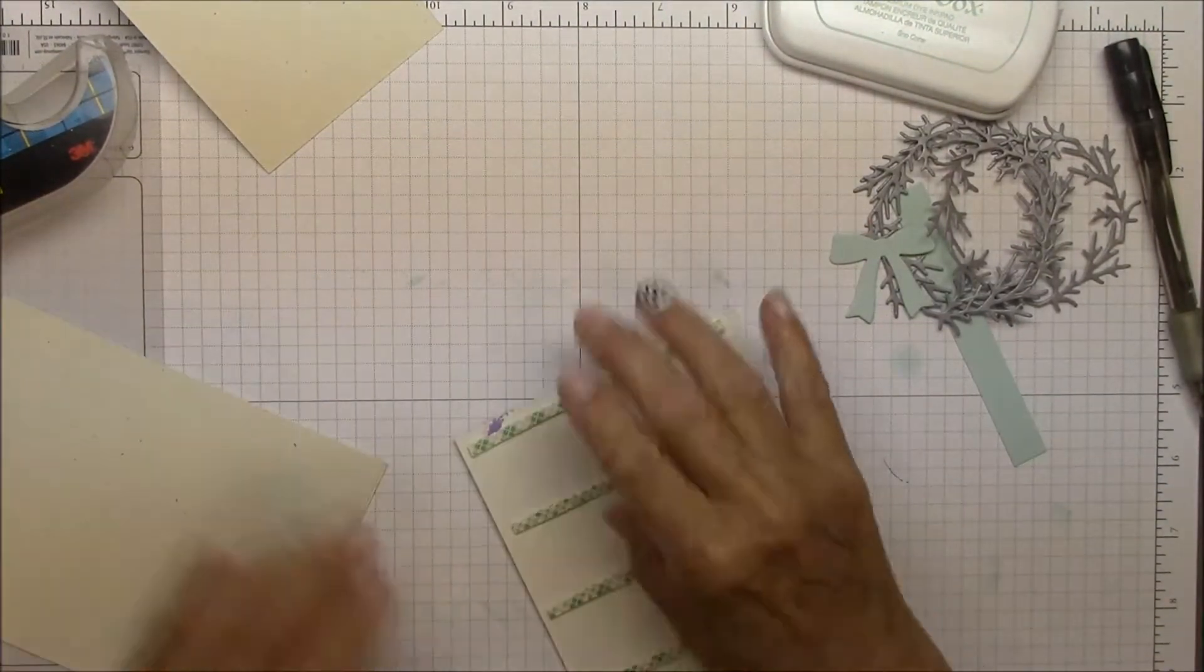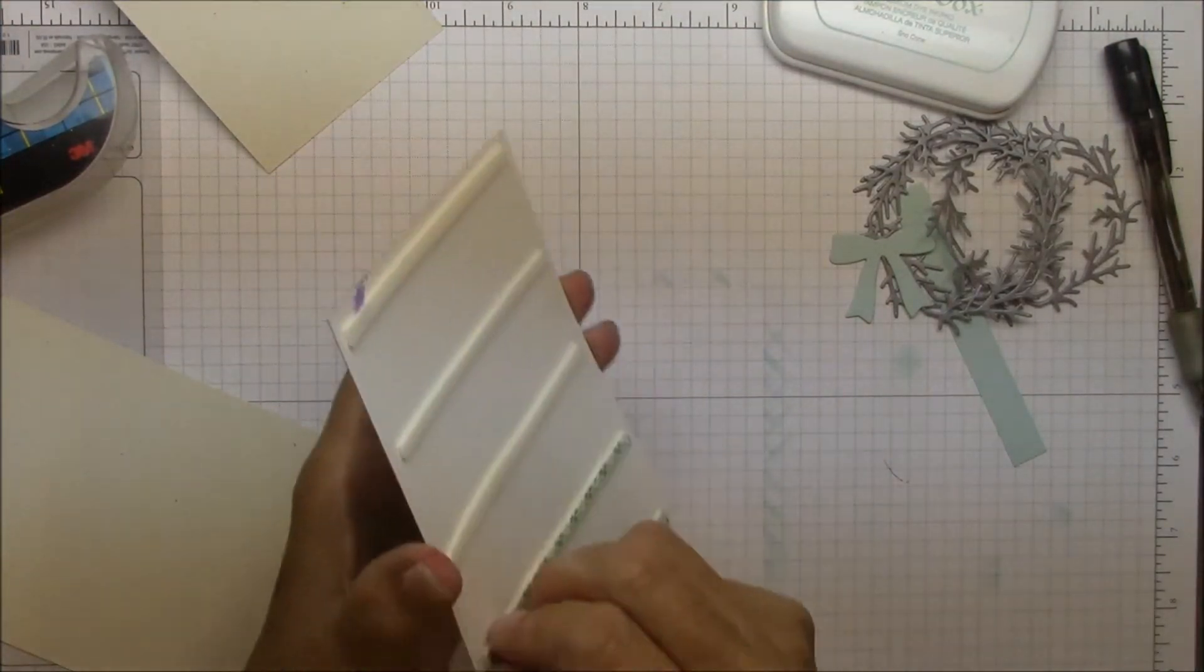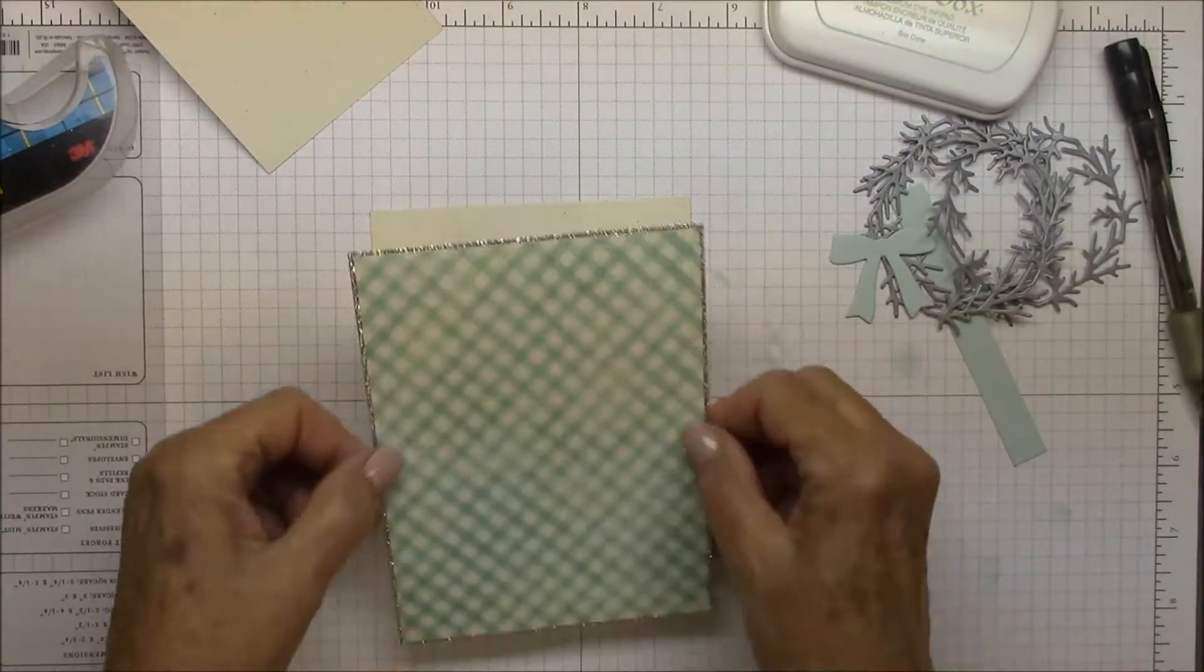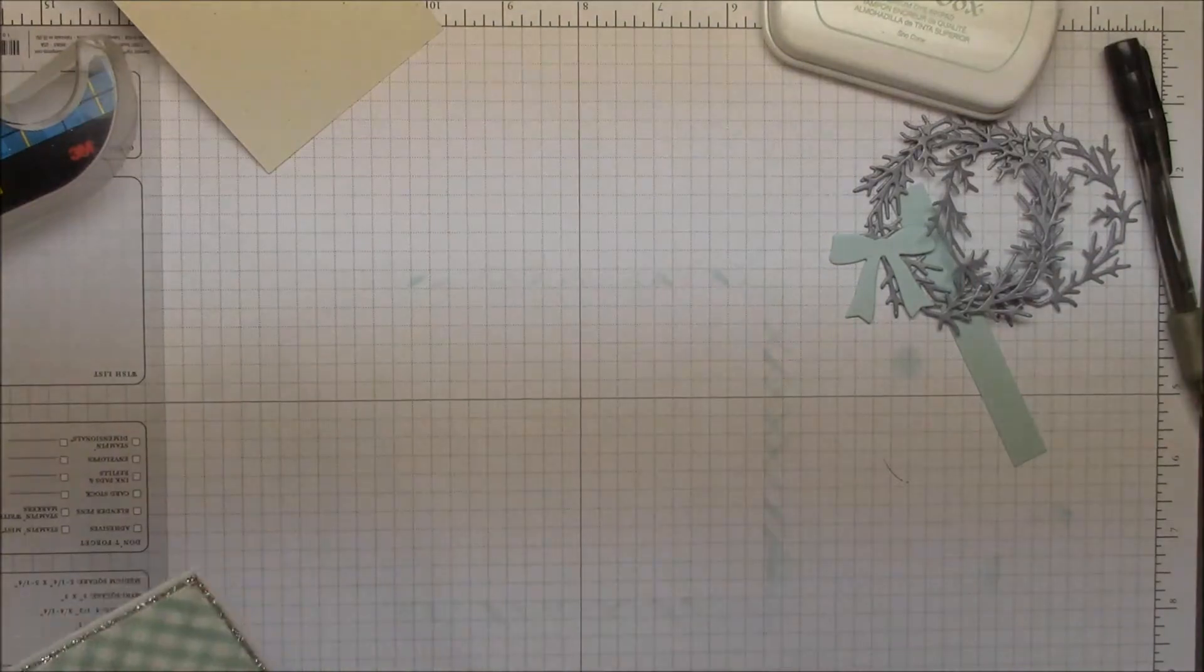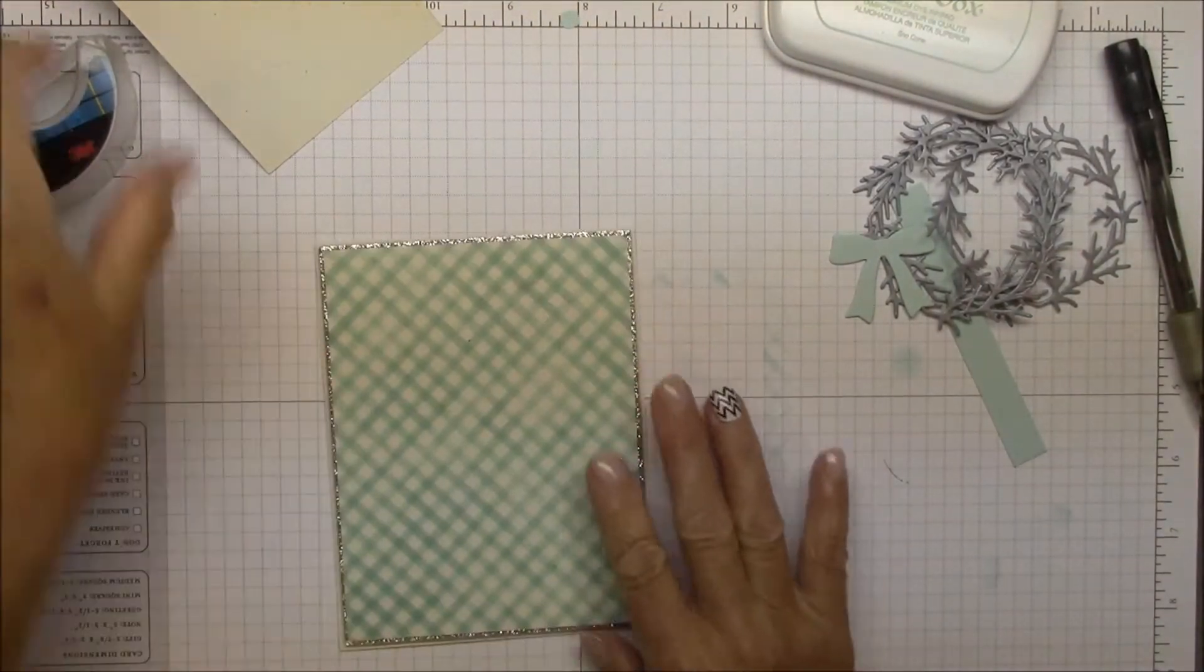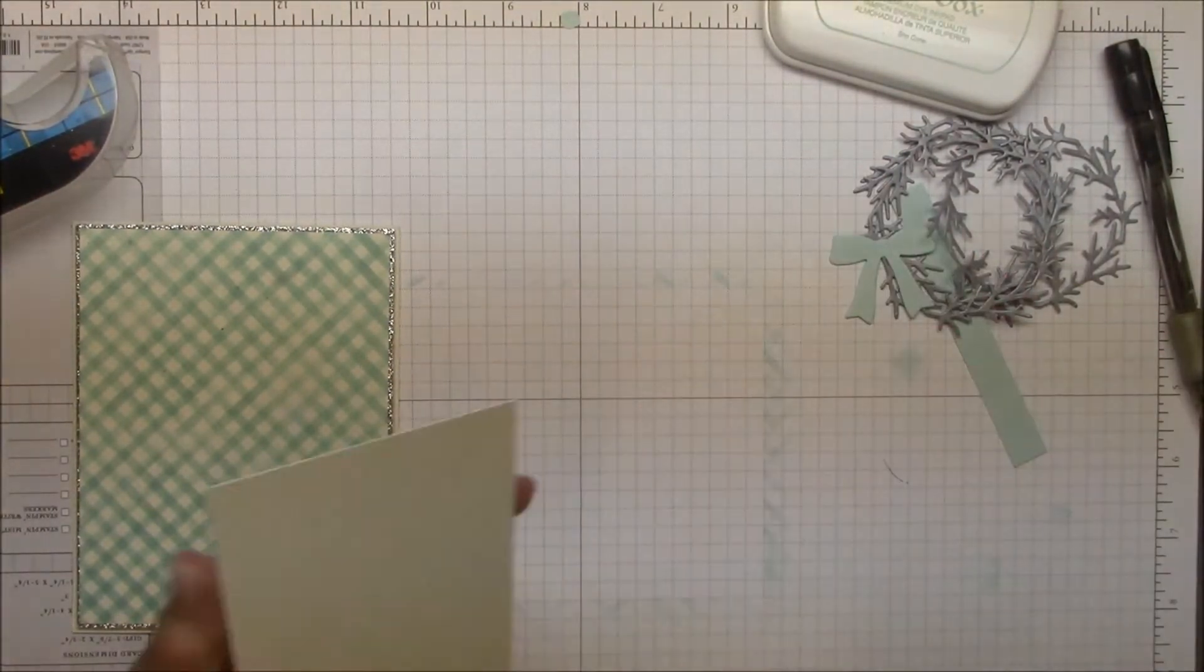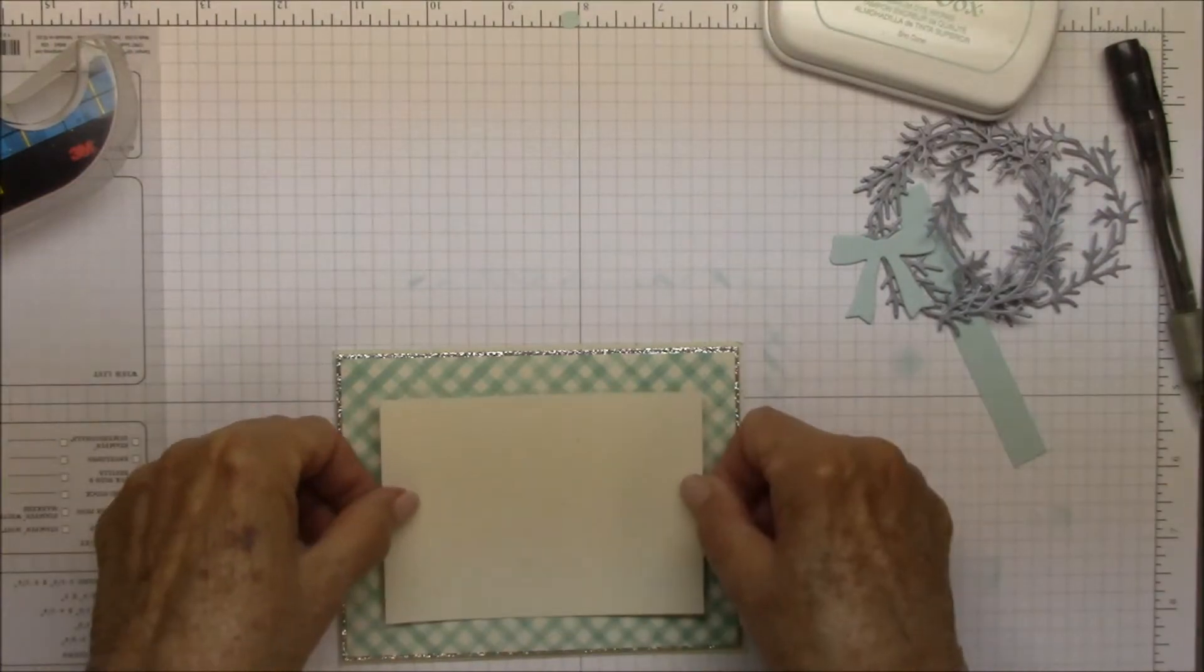And popping certain elements up on the foam certainly does that for me. This might be a little overkill, but I like to use a lot because it makes everything lie real flat. Adhering to the card base. And now I'm going to adhere my other little panel directly to that.